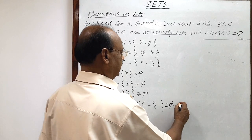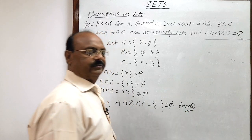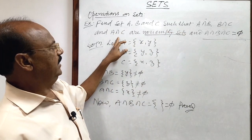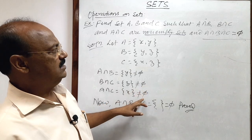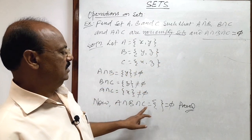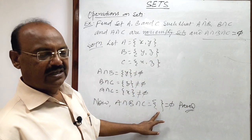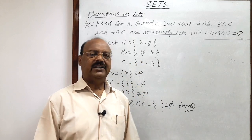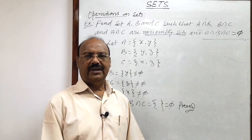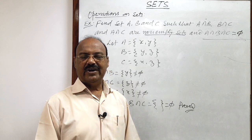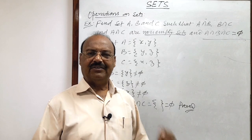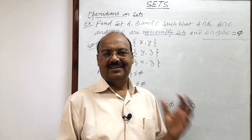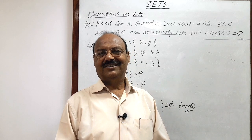So we have proved the result: A∩B, B∩C, and A∩C are non-empty sets, but A∩B∩C is an empty set — a null set, a void set. Questions in this chapter are very simple and very interesting. Please keep watching my videos and enjoy learning mathematics. Mathematics is a very interesting subject; just give it some time and you will master it. Wish you all the best.